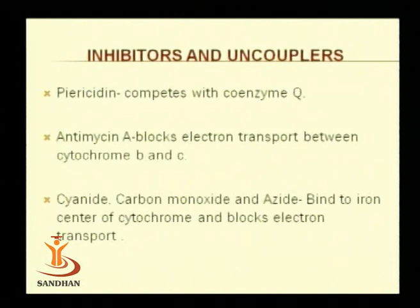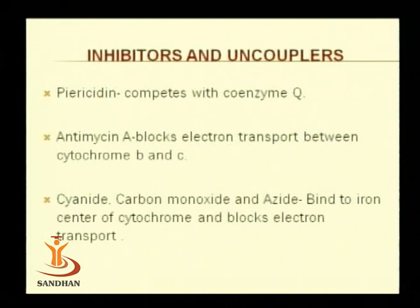Antimycin A blocks electron transport between cytochrome B and C, so further electron transport is blocked and total energy generation is reduced. Cyanide, carbon monoxide, and azide also have a similar type of action — they affect the flow of electrons. Cyanide and azide affect the last step, that is the electron movement from cytochrome A to molecular oxygen.